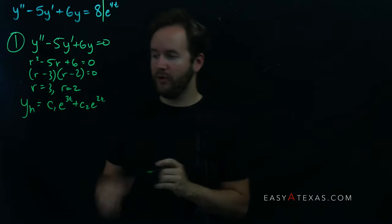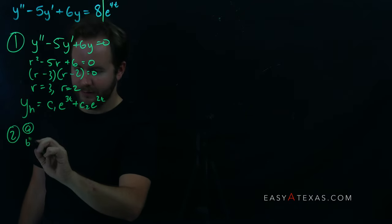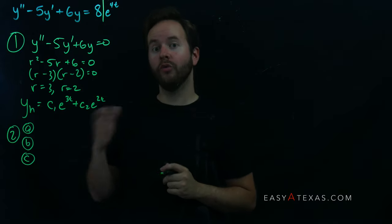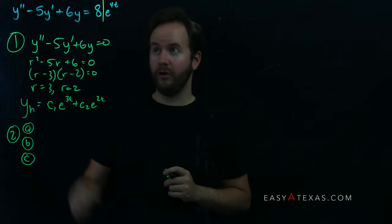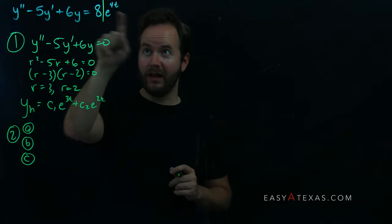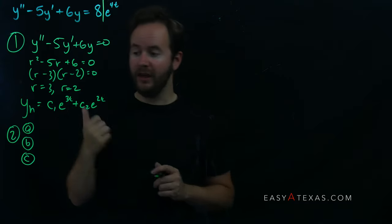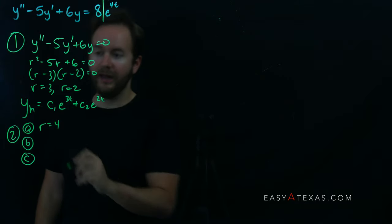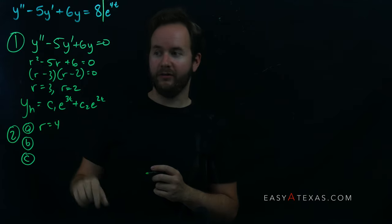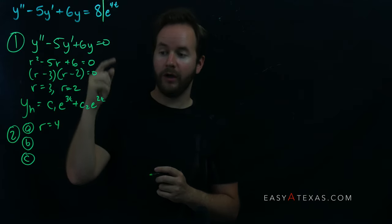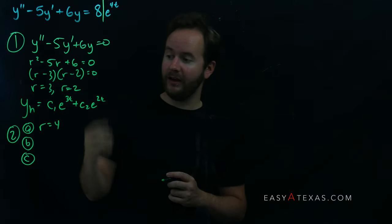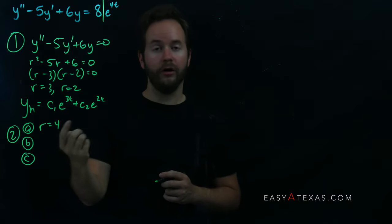Step 2 is a three-part question: a, b, c. Part a: what value of r corresponds to the right-hand side of your differential equation? I see an e^(4t), so the coefficient of t is 4, meaning r equals 4. Just as r equals 3 gave an e^(3t) term in the homogeneous, seeing e^(4t) on the right-hand side tells us r equals 4.